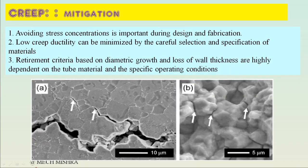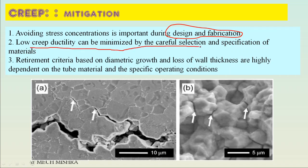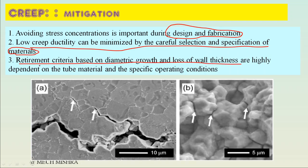To prevent creep: first, operate below the critical temperature for the selected metallurgy. Second, avoid stress concentration during design and fabrication as this aggravates creep formation. Third, low creep ductility can be minimized by careful material selection. Retirement criteria based on diametric growth and loss of wall thickness are highly dependent on tube material and specific operating temperature.